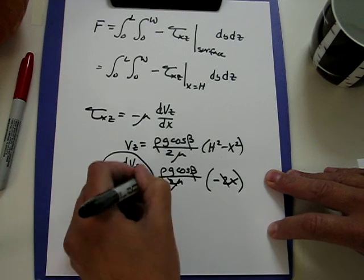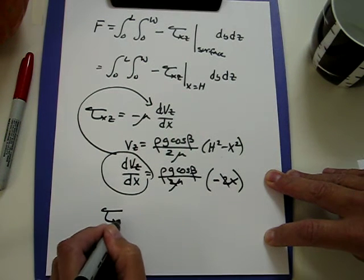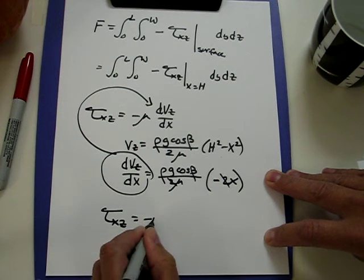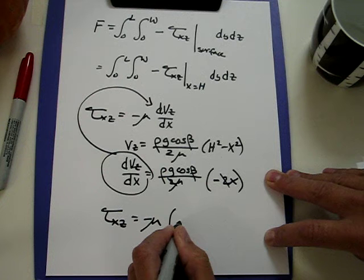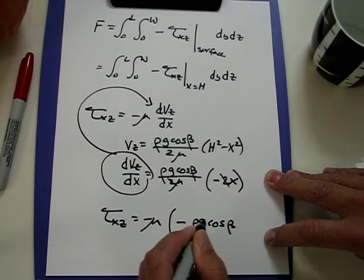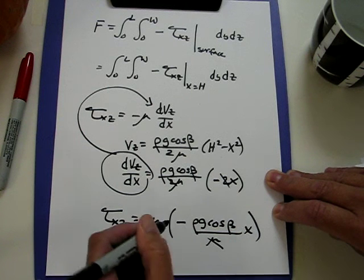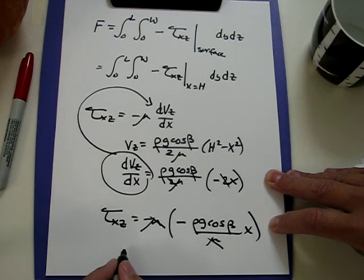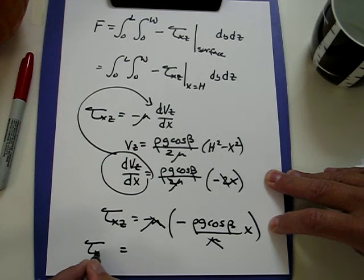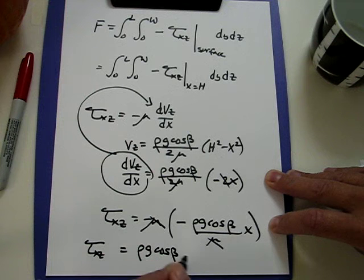When we plug this in here, we get tau_xz equals minus mu times minus rho g cos beta over mu times x. And we end up with tau_xz is rho g cos beta x.